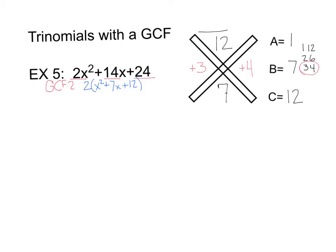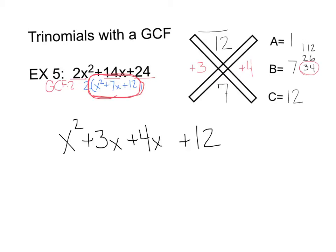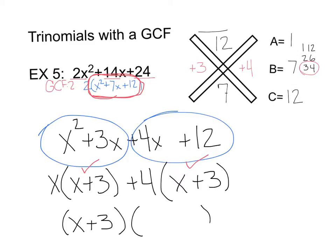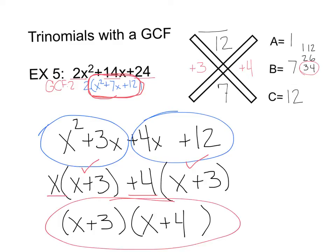Building our four terms off the second equation after pulling out the GCF of 2: first term x squared, last term 12, second term plus 3x, third term plus 4x. Factoring by grouping, we get x times x plus 3. Pulling out a 4 from the second section gives x plus 3 again. Since the parentheses match, we factor out x plus 3, and GCF times what's left gives us x plus 3 times x plus 4. Don't forget the overall GCF of 2 out front.